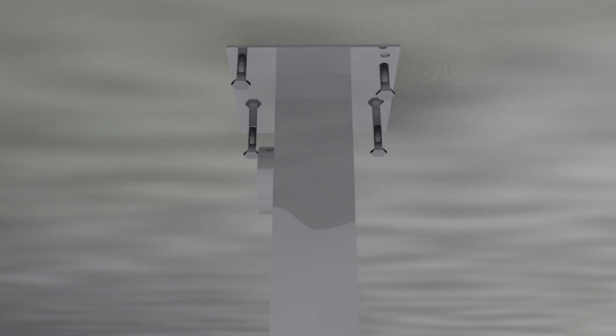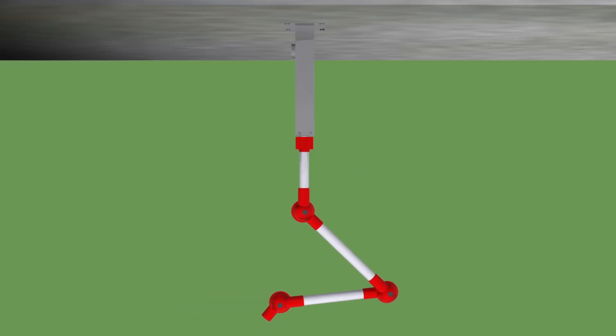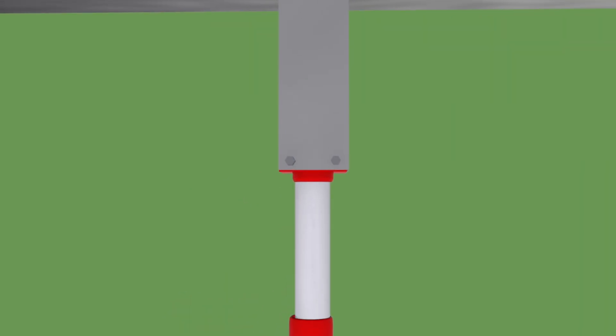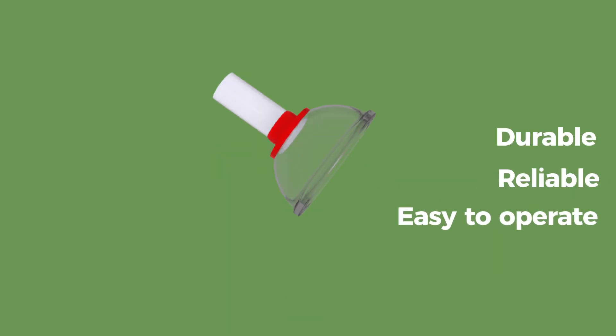The fume extractor system has polypropylene material which is chemical resistant and flexible arm connections which are self-supportive. It has manual flow control system and high quality filtration media. It is extremely durable, reliable and easy to operate.